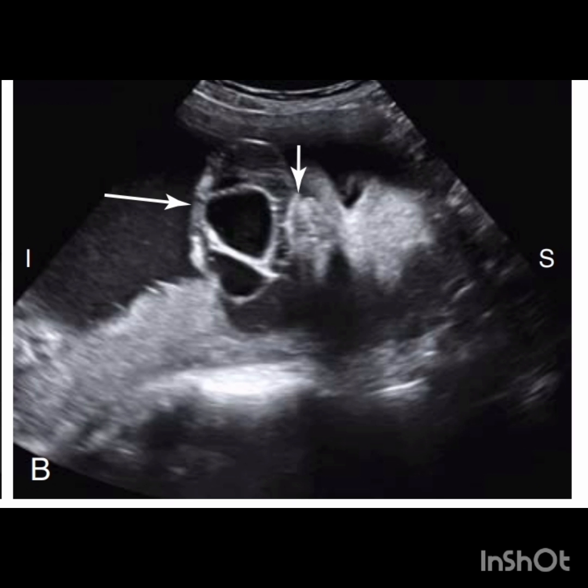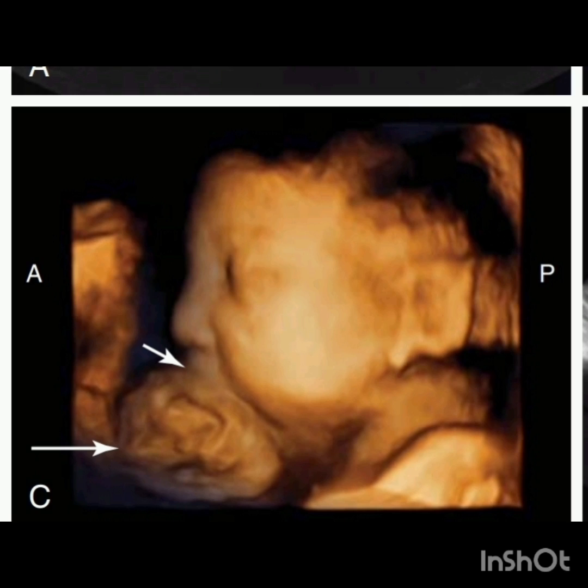This is the coronal image of the same fetus showing the encephalocele herniating through the mouth. This is also followed by a three-dimensional surface rendered image of the same fetus with the encephalocele herniating through the mouth.